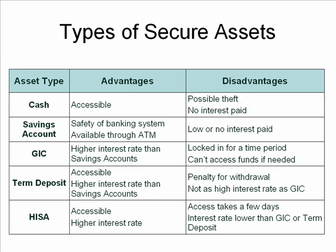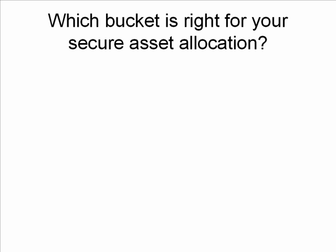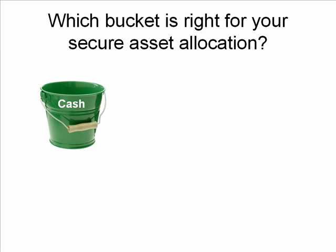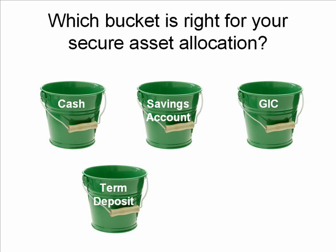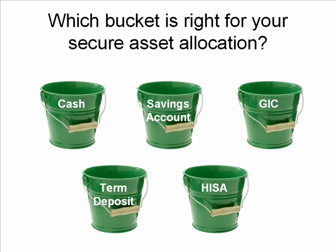Here's a slide I created, very simple: 'Which bucket is right for your secure asset allocation?' For that portion of your assets in an investment scenario which you want to be very secure, there are some different buckets to consider. First, cash — just keep it in cash — and then we can talk about the advantages and disadvantages without writing them out like the previous slide. Then we can talk about savings accounts, GICs, term deposits, and high interest savings accounts. Once we build each one of those, we can talk about each of the advantages and disadvantages, and the audience has that table to refer to when they want to make a decision later on.